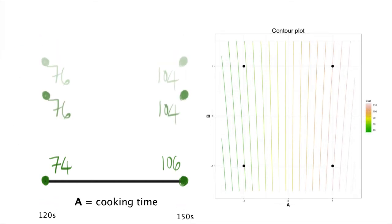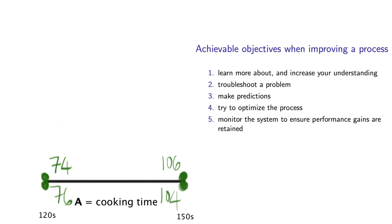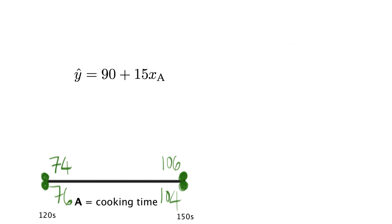Visually, this means we could collapse our square down to a single line. Let's apply that third objective now, and build a predictive model for the system. Y equals 90 plus 15 XA. Note that we don't have to include factor B or the A-B interaction in our model, because we've determined that B is not useful.